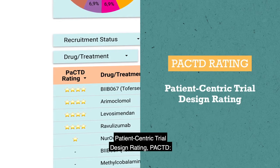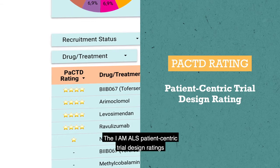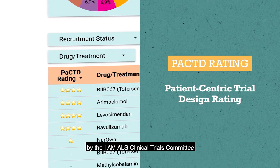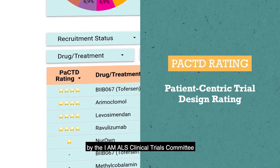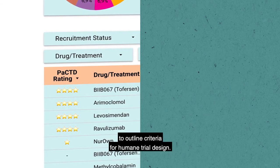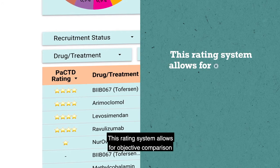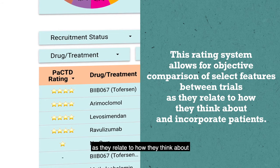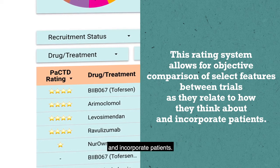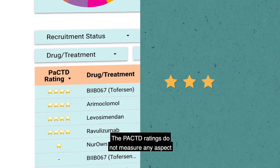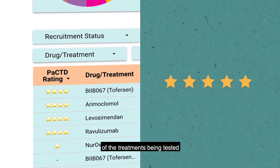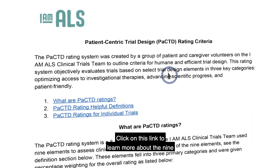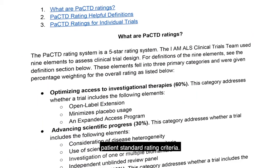Patient-centric trial design rating, or PACT: the IMALS patient-centric trial design ratings for clinical trials were created by the IMALS Clinical Trials Committee to outline criteria for humane trial design. This rating system allows for objective comparison of select features between trials as they relate to how they think about and incorporate patients. The PACT ratings do not measure any aspect of the treatments being tested, including the science or effectiveness of a treatment. Click on this link to learn more about the nine patient standard rating criteria.